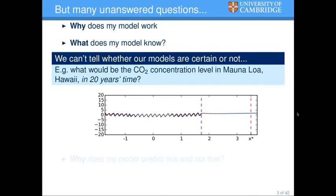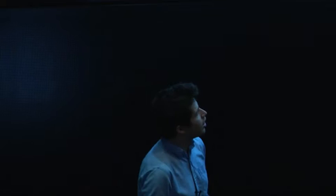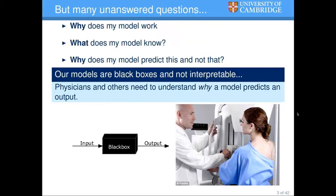What does my model know? We can't really tell whether our models are certain or not about their predictions. If you give me CO2 levels in Mauna Loa, Hawaii over the past 50 years and ask what's going to be the CO2 level in 20 years' time, I can fit a model, but I can't tell from the model whether it's certain about that prediction. Last question: why does my model predict this and not that? Basically our models are black boxes and not that interpretable.